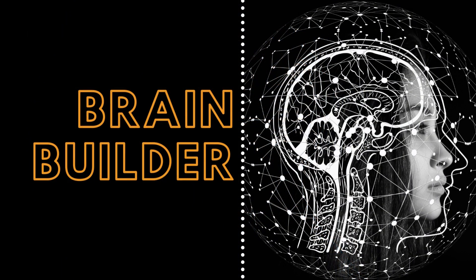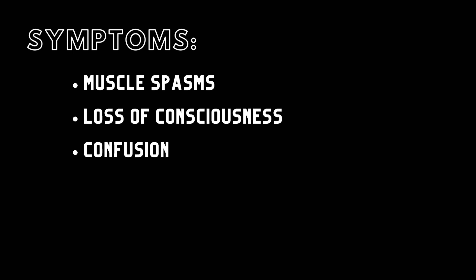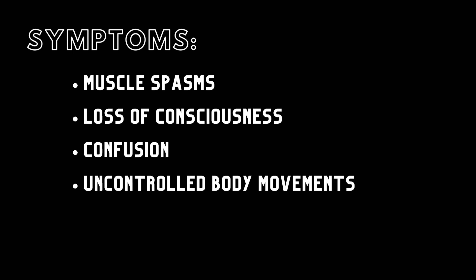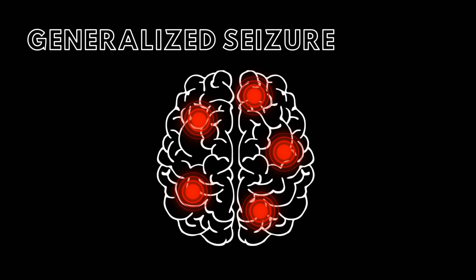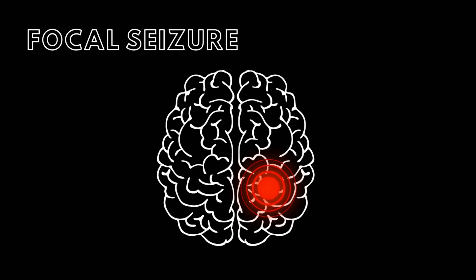Next, we will look at the symptoms, causes, and treatments for epilepsy and then give a patient example. Epileptic symptoms can include muscle spasms, loss of consciousness, confusion, and uncontrolled body movements, typically lasting from seconds to minutes. There are two types of seizures. A generalized seizure begins with abnormal electrical activity in both sides of the brain at the same time. The second type, focal seizures, begins with unusual electrical activity in only one specific region of the brain but can extend to other locations.